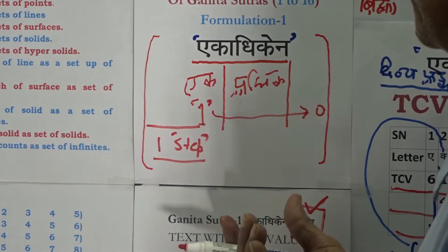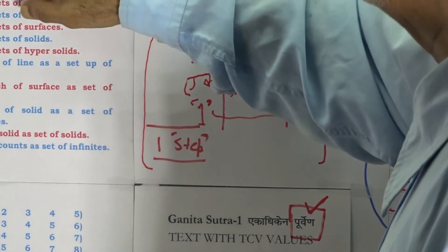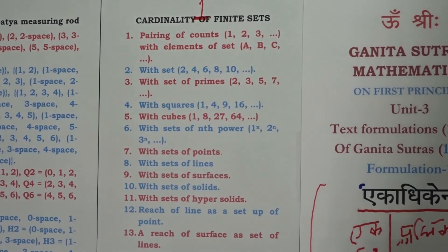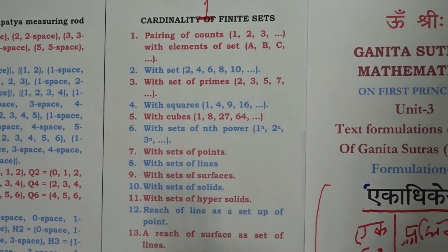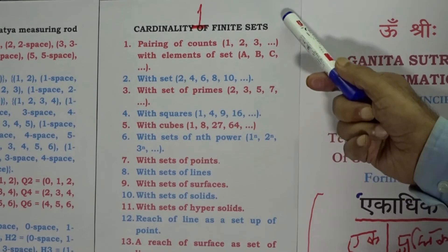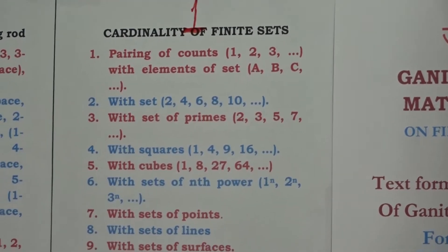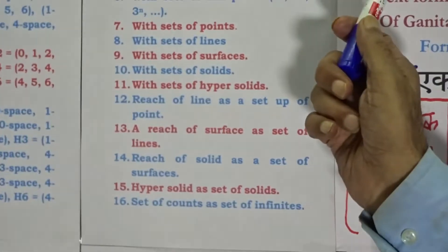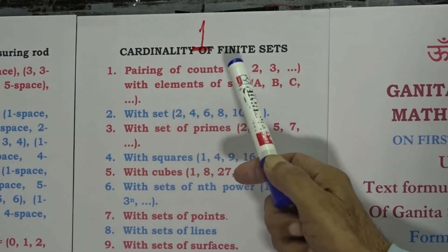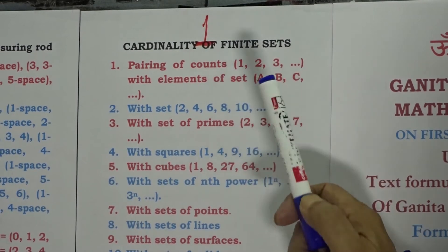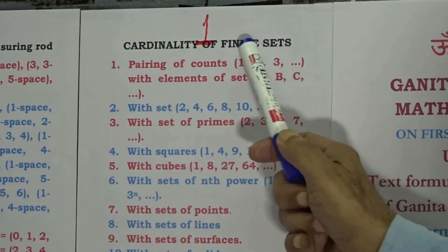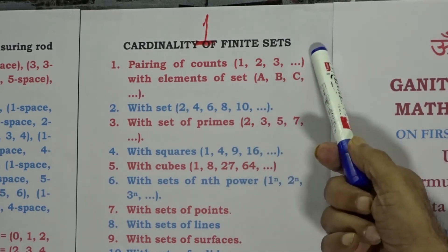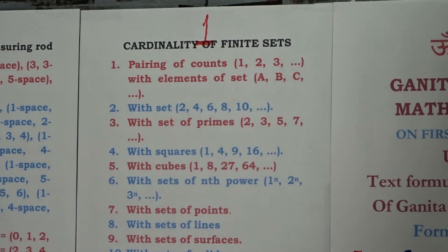This meaning shall lead us to the simple rendering of the formulation Eka Adhiken, taking it to a mathematical rule. We shall avail this rule to reach at the cardinality of finite steps. The first reach value on first principles is in the form of the cardinality of finite sets. This cardinality of finite sets on first principles, inherently embedded in the formulation Eka Adhiken, is to be availed. It will be a blissful exercise to have a pairing of counts: let us pair the counts 1, 2 and 3 with elements of sets A, B and C.